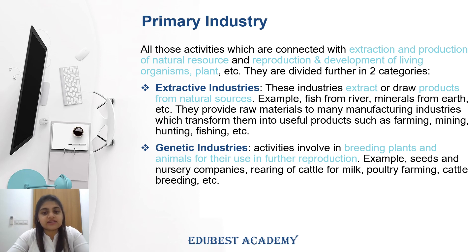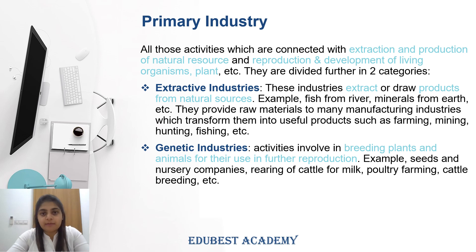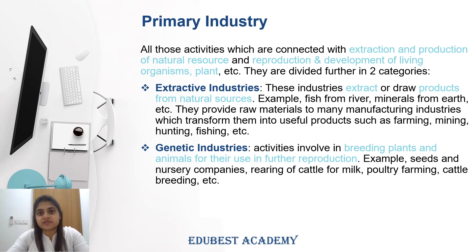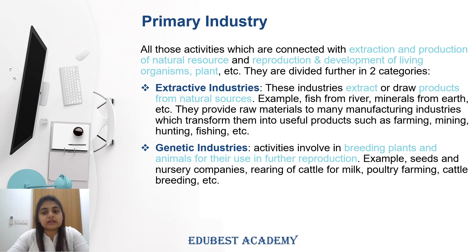Next is genetic industry. Genetic industry is related to plants and animals — their breeding — and is used in further reproduction. Whatever we use from plants and animals, all those things are used in further reproduction or further processes. For example, seeds collected from nursery companies, rearing of cattle for milk, poultry farming, cattle breeding, etc.